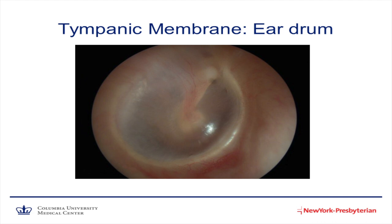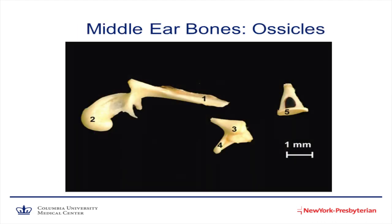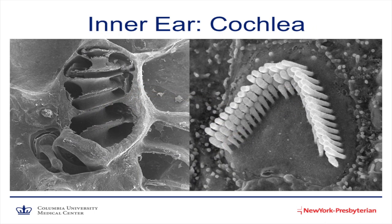I just wanted us to have a better picture of what these things look like, and this is a picture of an actual eardrum. This is a picture of the three tiny little ear bones, and I just wanted us to see that they're extremely small. This is a measure of one millimeter, and that kind of gives us a good size reference as to how small they actually are. And here are some very microscopic pictures of the cochlea, a spiral-shaped structure, and here is a very microscopic picture of those tiny hair cells that are so crucial to hearing.